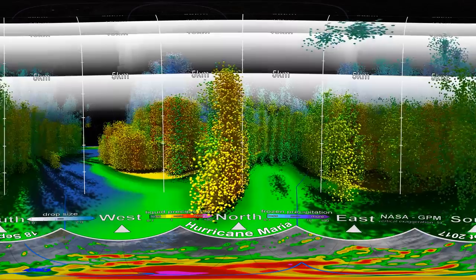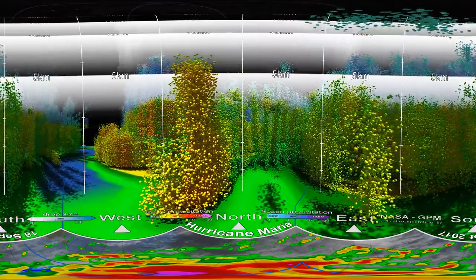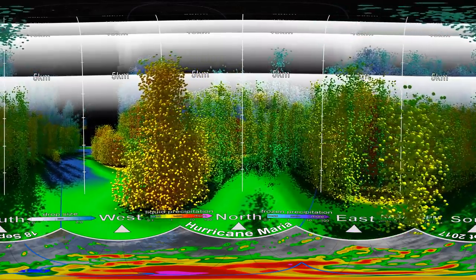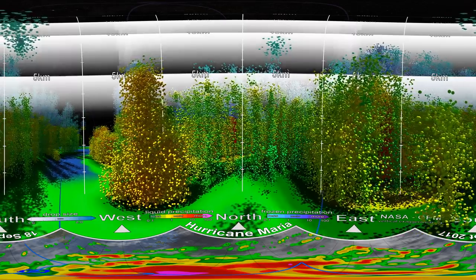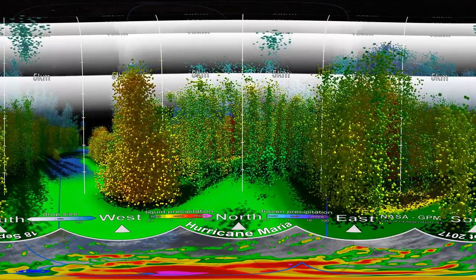Look up and you'll see blue and purple dots that show light and intense frozen precipitation. Right now, we are travelling through a gap between rain bands.